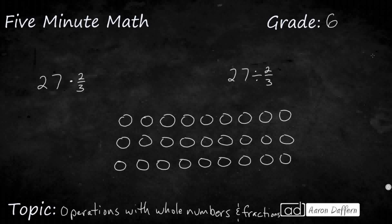So I have an array here of nine circles, three rows, and I want to show you the difference between taking that 27, which is represented, dividing it by two-thirds, and multiplying it by two-thirds. So let's start with the multiplication.